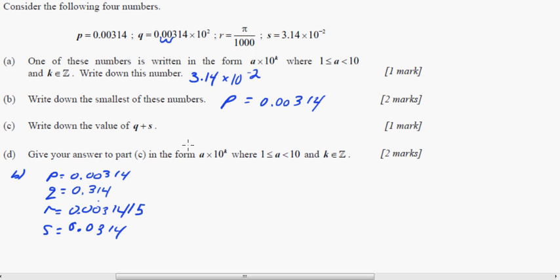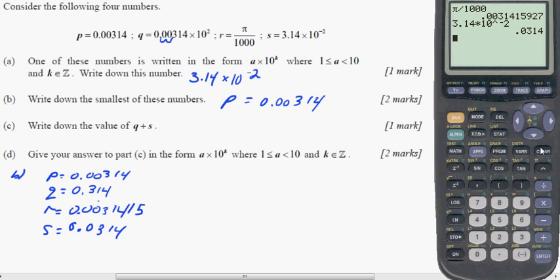Now, write down the value of Q plus S. All right, now here, I wouldn't even mess around with it. I would go straight to the calculator. So for this one, just be careful with these. I would put it in parentheses or brackets. So it's 0.00314 times 10 to the second power, plus,